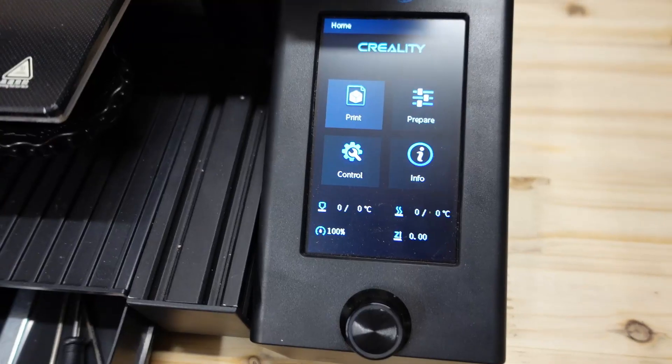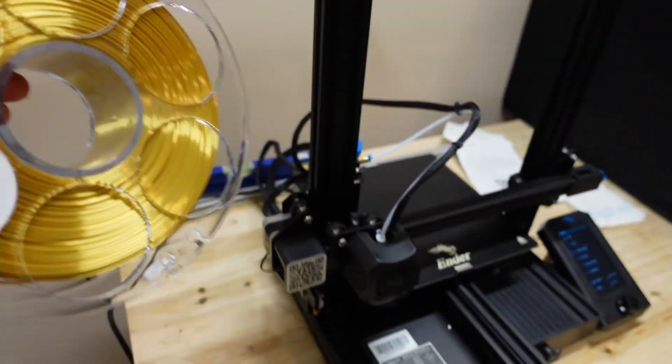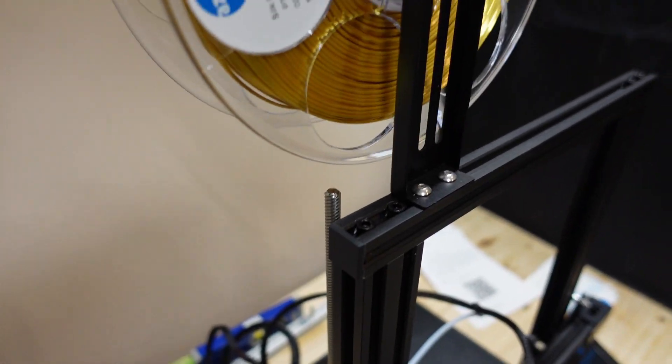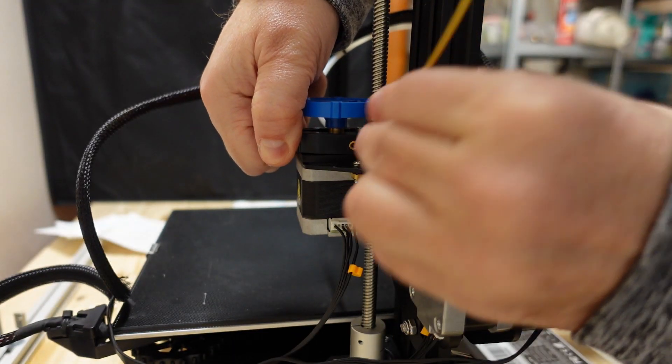My next printing will be on Ender 3 V2 because I'm very curious how will this calibration cube stick to the glass surface.